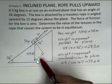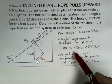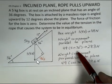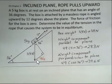We want this side, this W parallel. We're opposite the 36-degree angle, so we use the sine function. 49 newtons is the hypotenuse. Multiply by the sine of 36, we get 28.8 newtons.